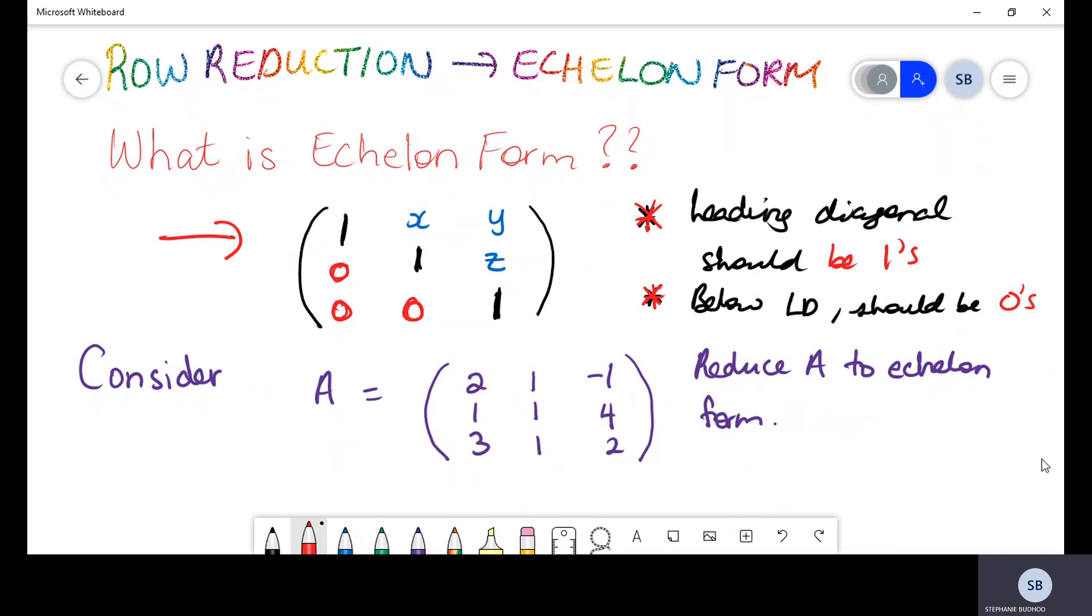Echelon form just considers what's along that diagonal as well as what's below. So let's look at a question and see how we can apply the reduction. Now, consider we have this matrix. This A matrix is a 3 by 3 matrix, and they're asking us to reduce this matrix to echelon form. So now, because we know what echelon form looks like, you guys should understand that all they want is for our numbers in our diagonal to be all 1's, as well as all of the values below that leading diagonal to be all 0's.